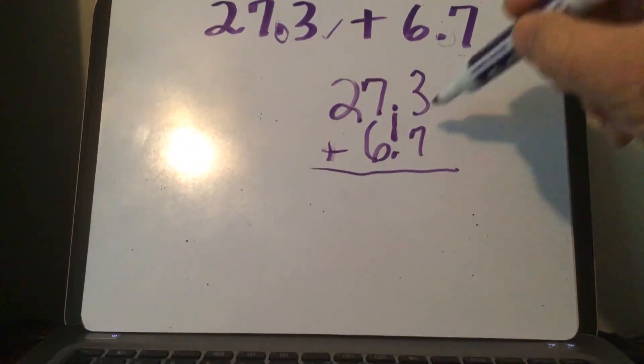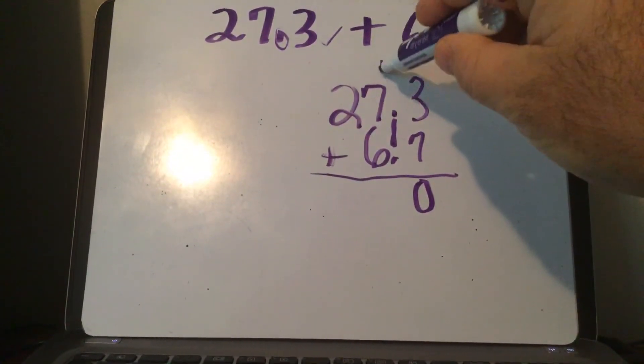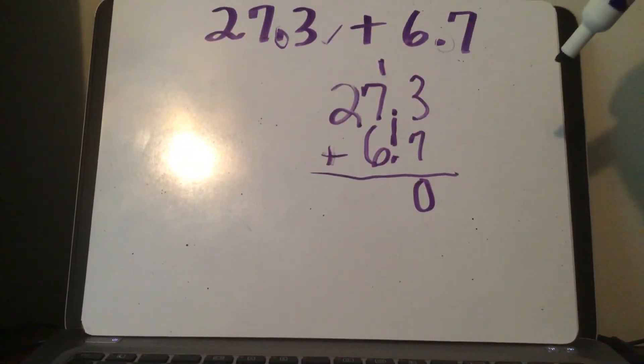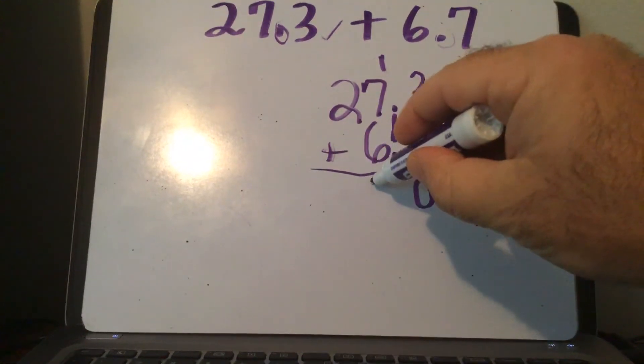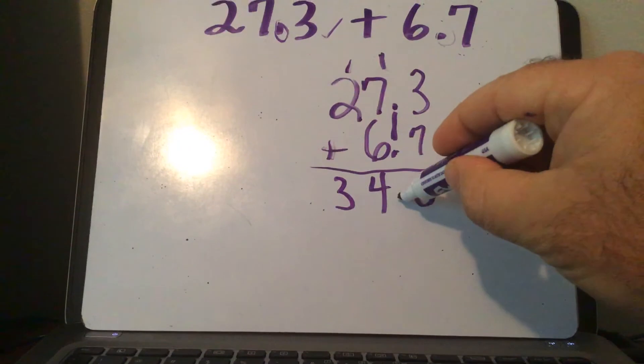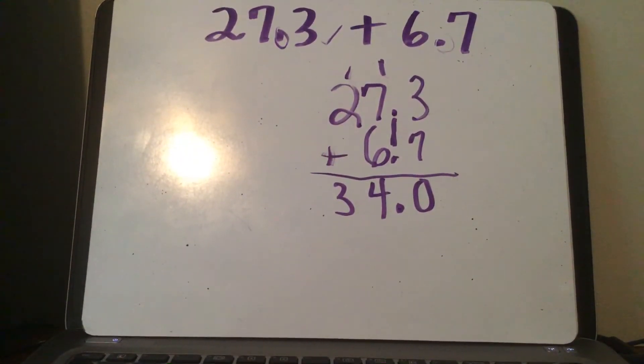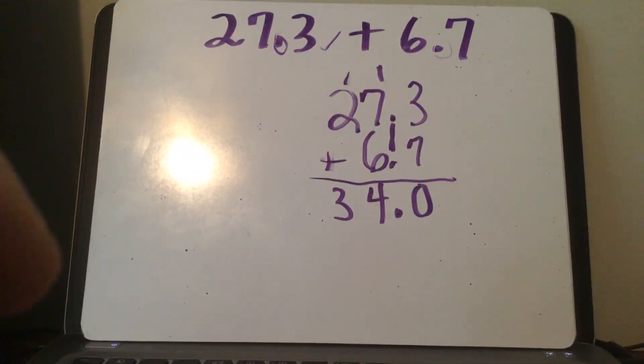You go 7 plus 3 is 10, I carry my 1. 7 plus 6 is 13, plus 1 more is 14, carry your 1 again. 2 plus 1 is 3, you bring your decimal straight down, and your answer should be 34. So that's how I want you to do these problems today.